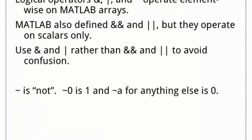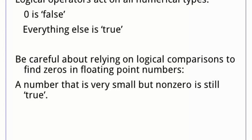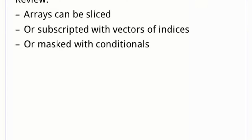There are two sets of logical operators in MATLAB. A single AND or vertical bar corresponds to element-wise AND and OR on an array. Double AND and double OR operate on scalars only. It is usually preferable to use the single AND or single OR since they work in both cases. In logical expressions, zero is the only number that is false. Be careful, though — very small numbers are still non-zero even if they look like zero when you print them. To review, arrays can be sliced with vectors of indices or masked with conditionals. No matter what you do, if you are writing a loop over array elements, you have probably missed something or you are doing something wrong.